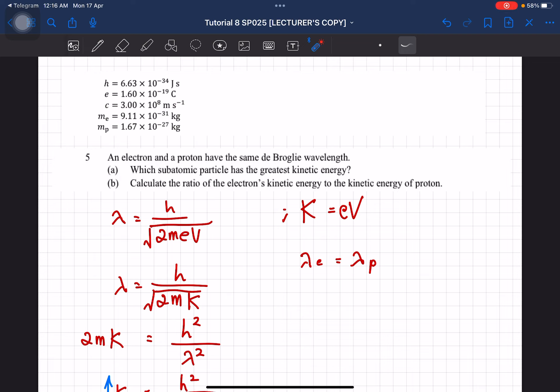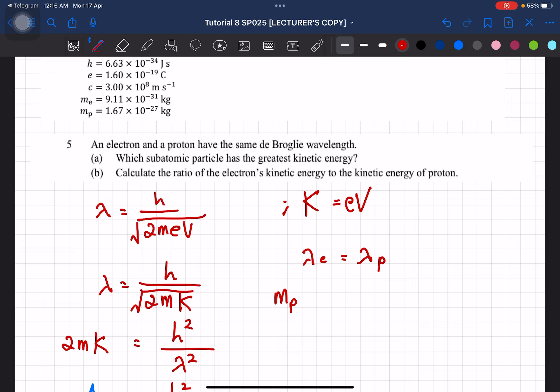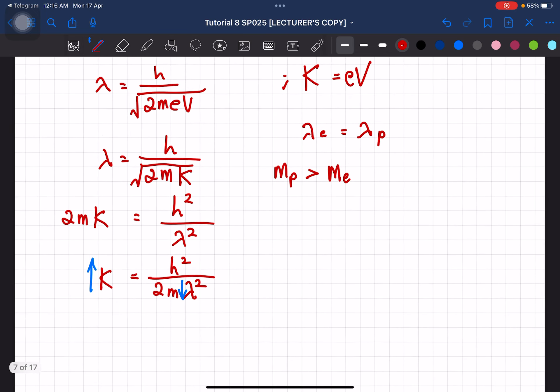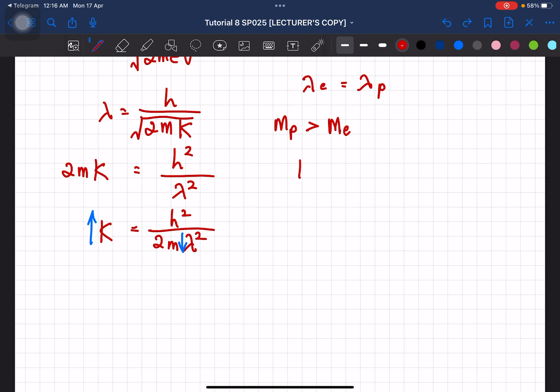So kalau kamu tengok disini, which one yang greater? Right, so obviously, from this number here, we know that mass of proton is greater than mass of electron. So what we can say is, the kinetic energy of electron is greater than kinetic energy of proton. Hence, electron has the greatest kinetic energy.